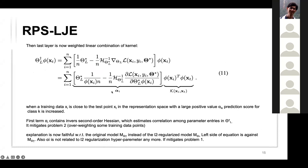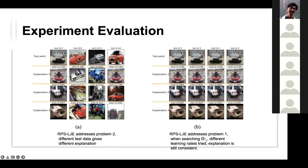Alpha_i is related only to the original model, mitigating problem one. For problem two, when you have different test points from the same class, the new method now gives different explanations. For problem one, when searching for zeta-star with different learning rates, the explanation remains consistent.